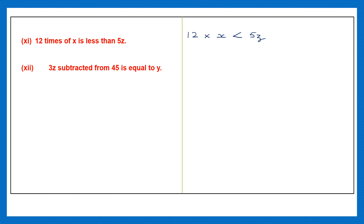Question 12: 3z subtracted from 45. Now here you have to be careful — 3z subtracted from 45 means 45 should come first. So 45 minus 3z is equal to y. Let's write that: 45 minus 3z is equal to y.